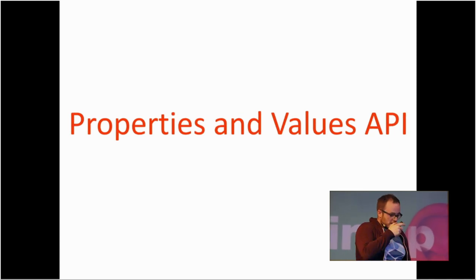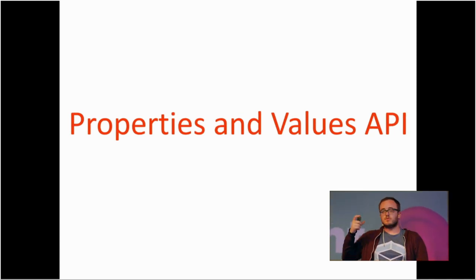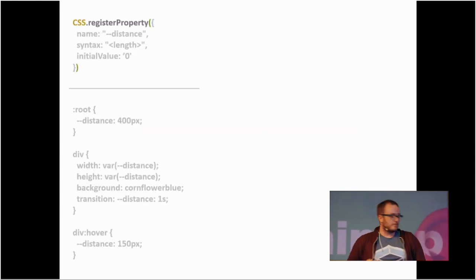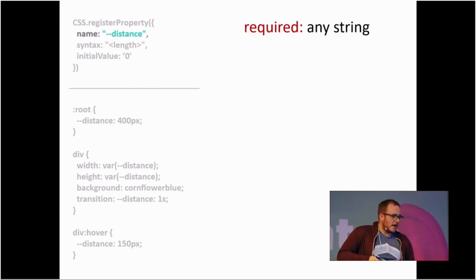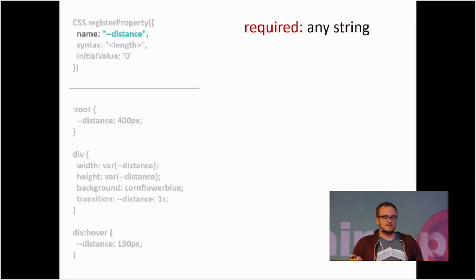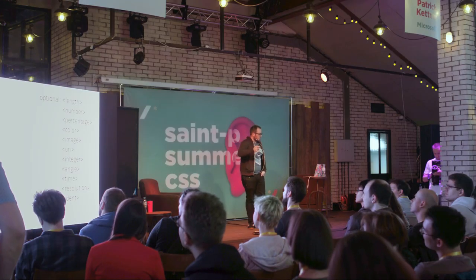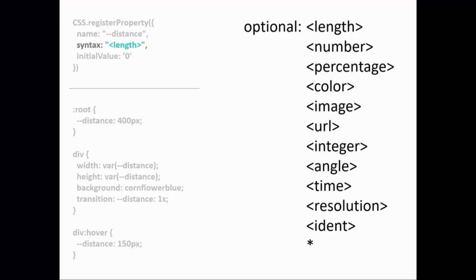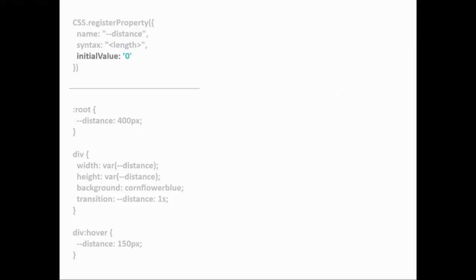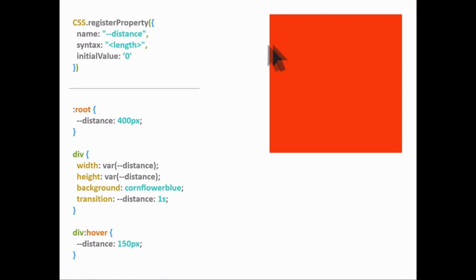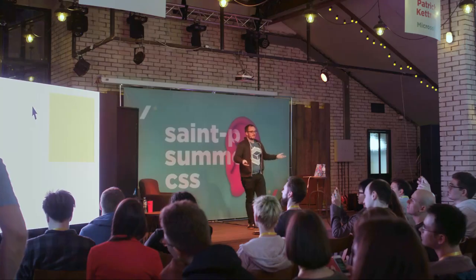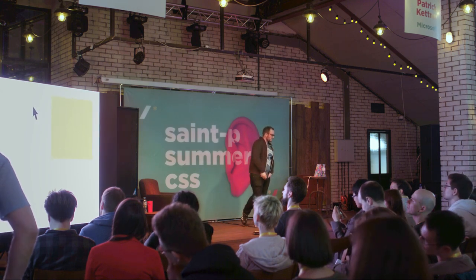What the Properties and Values API does is allow you to give a type to your variable. It's a single API called CSS.registerProperty. The only required attribute is the name field. So in this case, for the name 'distance', we say it is a type of length. There are a whole bunch of types — pretty much any CSS type that exists. You can also set an initial value. Now that the browser knows 'distance' is a length type, you can animate it because it inherits all the behavior of any CSS length. This is already shipping in Chrome.